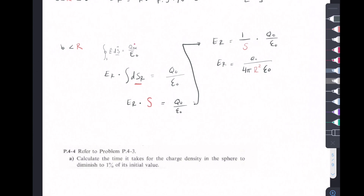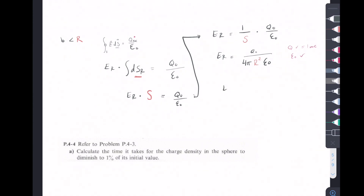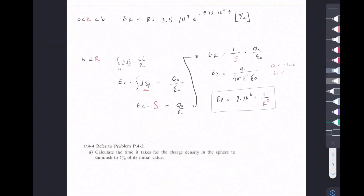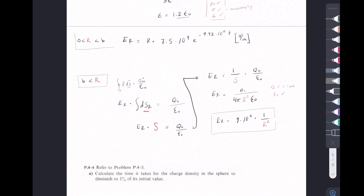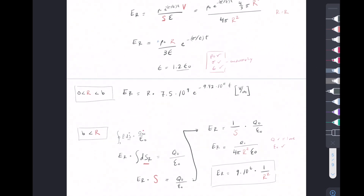Dividing, E_r equals q-naught over epsilon-naught times the Gaussian surface, which gives E_r equals q-naught over (epsilon-naught times 4 pi r-squared). Plugging in q-naught equals 1 millicoulomb and epsilon-naught as the constant, we get E_r equals 9 times 10 to the 6th times 1 over r-squared. That's our E-field for the outer region where r is greater than b.